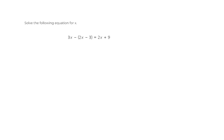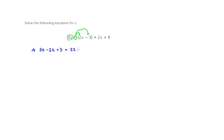So first thing I would do is remove the parentheses by distributing this negative sign here. You have a negative sign here — I'm going to distribute that to 2x and also to negative 3. So by distributing the negative sign to 2x, you have negative 2x. And distributing the negative sign to negative 3, that's going to be positive 3. The right-hand side looks okay, so I'm going to leave it: 2x plus 9.